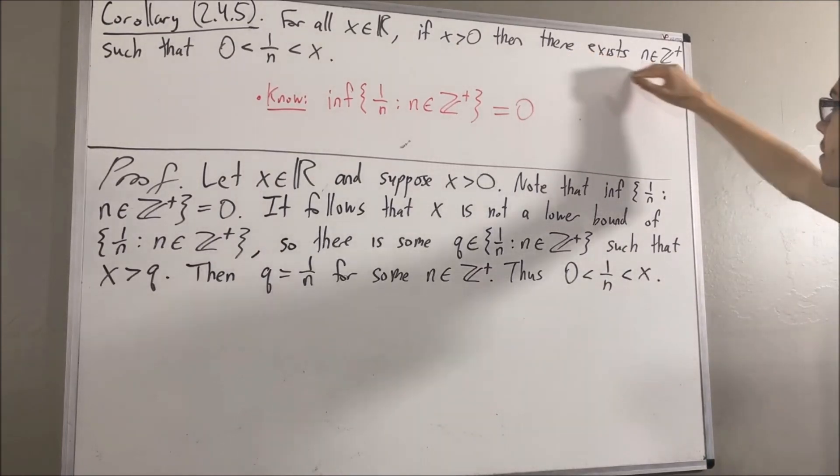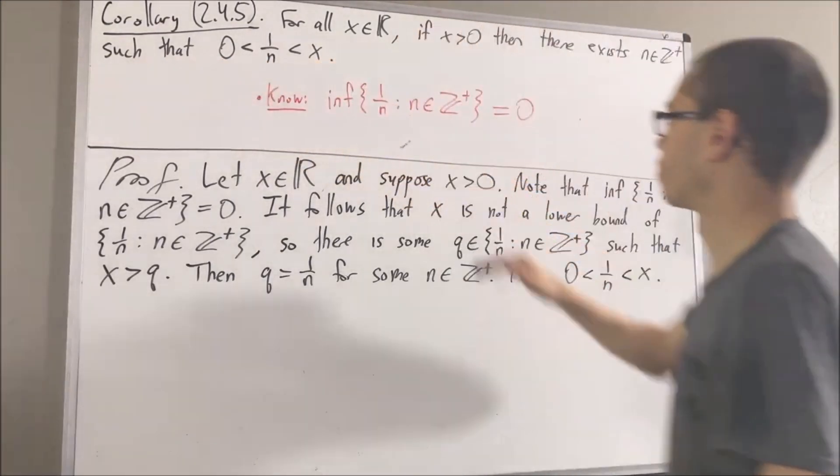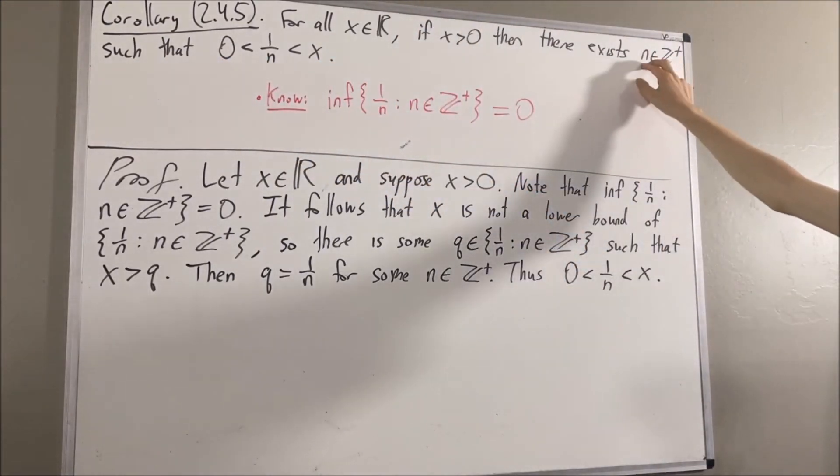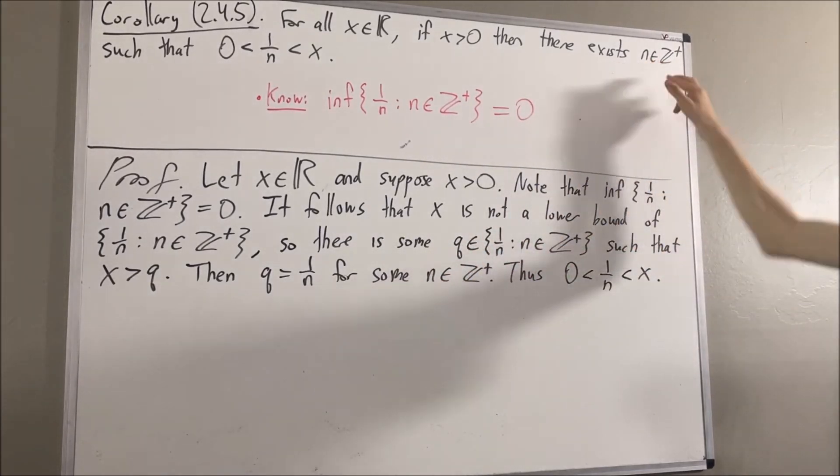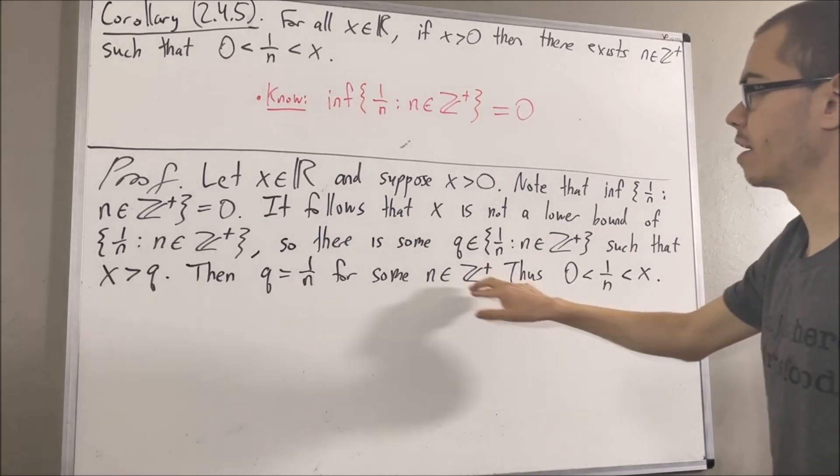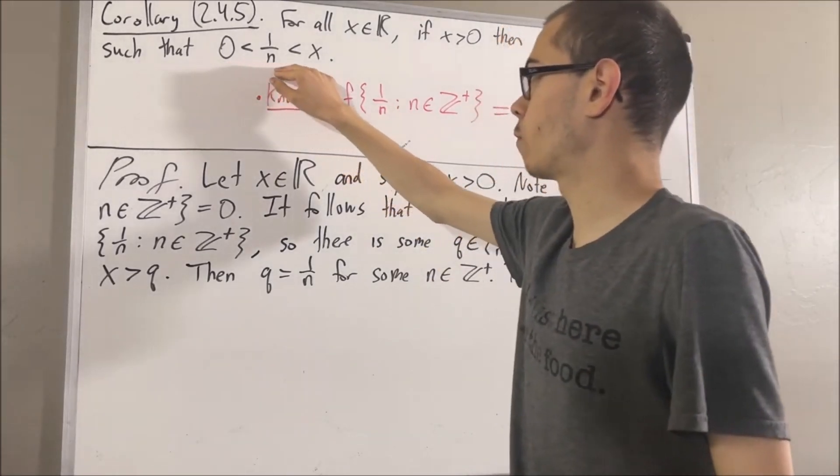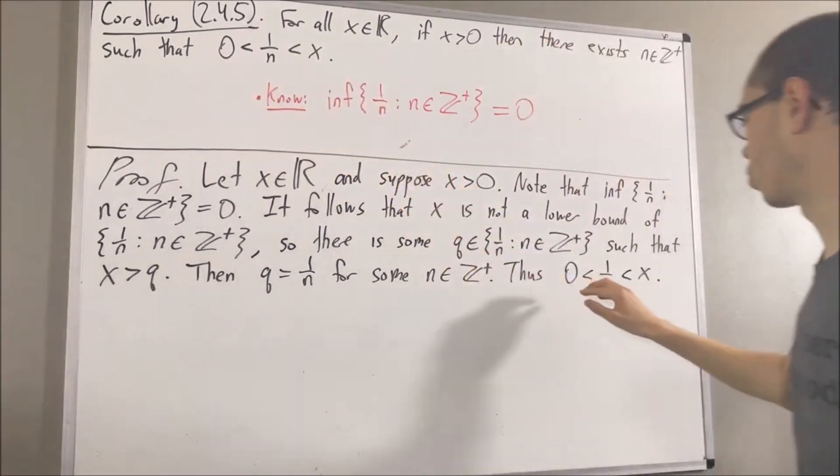And we have just shown that this is in fact true. Because if we take n here to be the n in our proof, well yeah, n is a positive integer. That's what we have here. And zero is less than one over n, which is less than x. That's what we have right here.